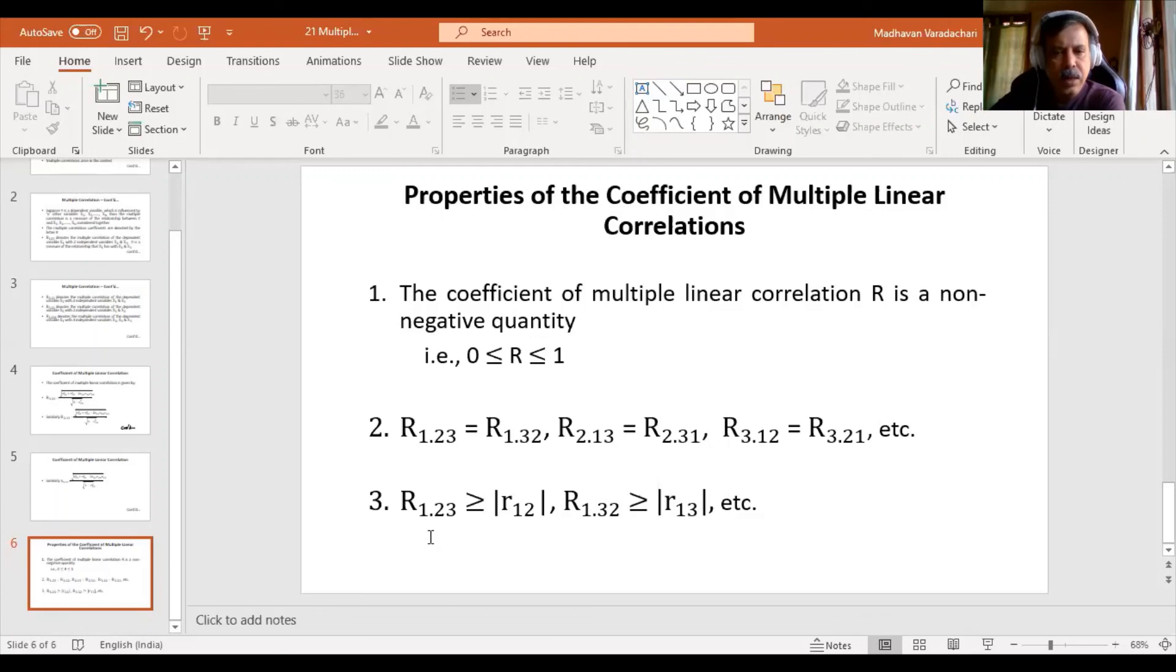And then R1.23 will be definitely larger than or equal to r12 or R1.32 will be larger than or equal to r13, etc. So these are the properties of multiple correlation.